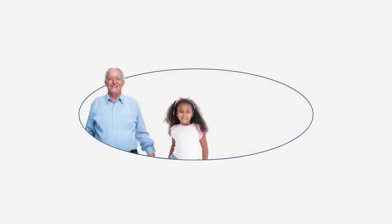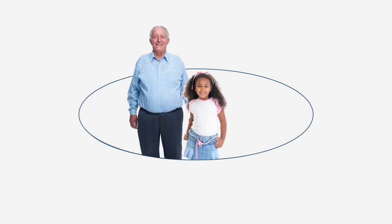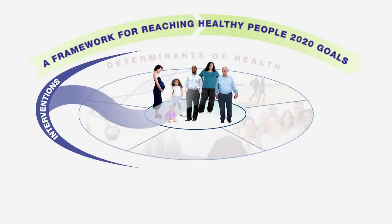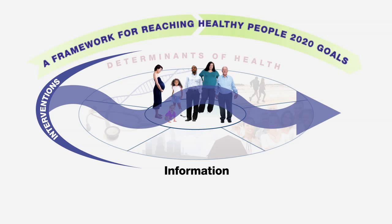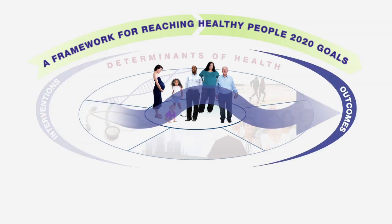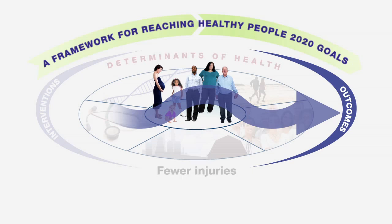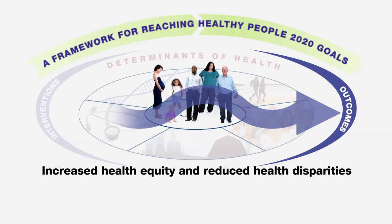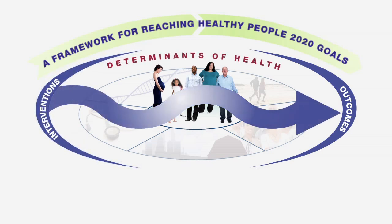These examples show how determinants of health can impact our lives and how, working together, we can improve the health of individuals and communities. Public health interventions typically target one or more determinants of health through information, policies, and programs. Each intervention is designed to produce specific health outcomes. As we saw with Carla and James, an intervention can have multiple outcomes including positive behavior change, reduction in diseases, conditions, and their risk factors, fewer injuries, improved well-being and health-related quality of life, and increased health equity and reduced health disparities. This is at the core of the Healthy People 2020 framework.